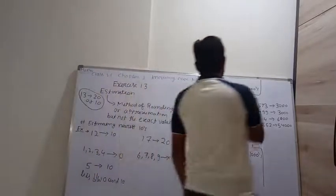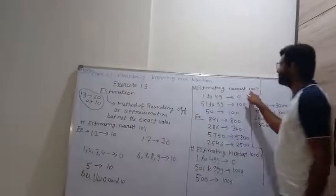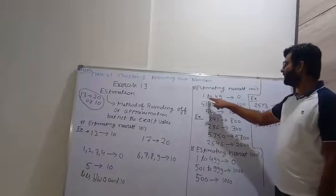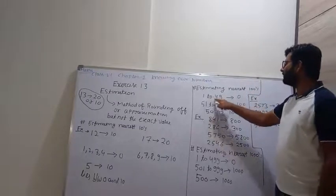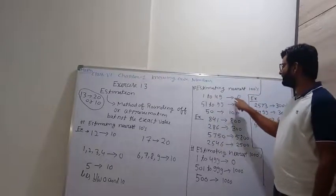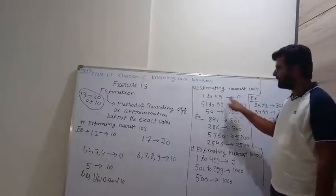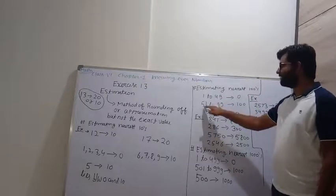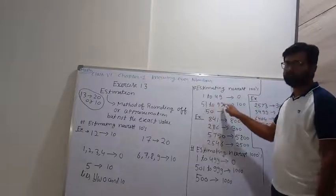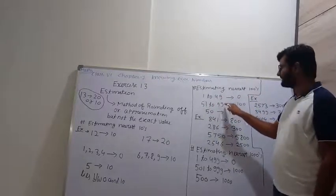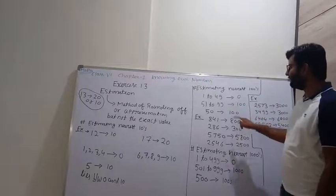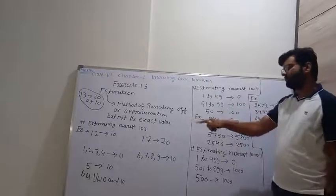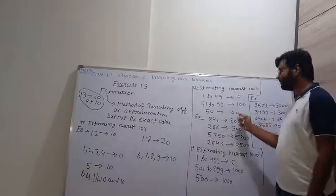Now, estimating to nearest 100s. In these, we convert 1 to 49 into 0 — it becomes the previous hundred. And 51 to 99 is converted into 100 — the next hundred. And 50 is also converted into 100.